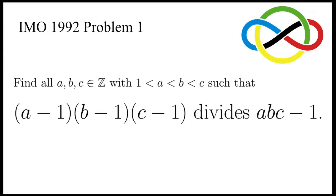Let's take a look at this problem, taken from the International Mathematical Olympiad 1992. It says: find all integers a, b, c with 1 < a < b < c, such that (a-1)(b-1)(c-1) divides abc minus 1.